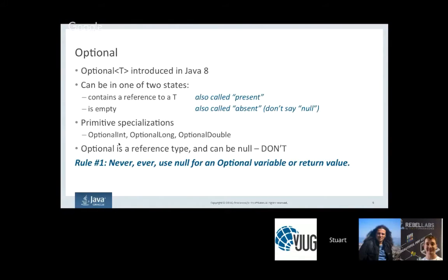Along with Optional<T>, the reference type, there are also primitive specializations for int, long, and double. I'm going to focus on Optional<T>. Optional is a reference type, and in Java any reference to an object can be null. That's distinct from an Optional being present or absent. Rule number one: never use null as a reference for an Optional. Don't put null into an Optional variable, and if you have a method that returns an Optional, never return null from it.